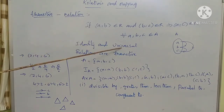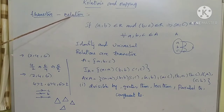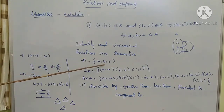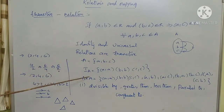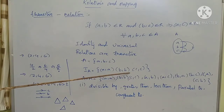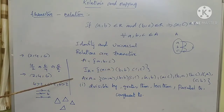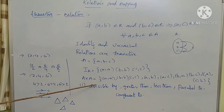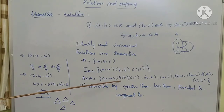Identity and universal relations are also transitive relations. For set A equal to {a, b, c}, the identity relation is {(a,a), (b,b), (c,c)}, and the universal relation A cross A contains all possible ordered pairs from A to A, such as (a,a), (a,b), (a,c), (b,a), (b,b), (b,c), (c,a), (c,b), (c,c).